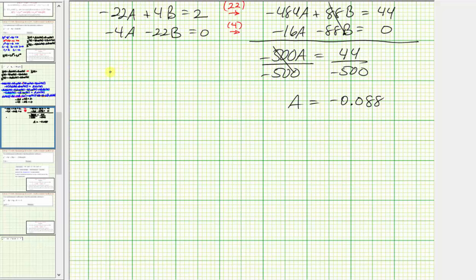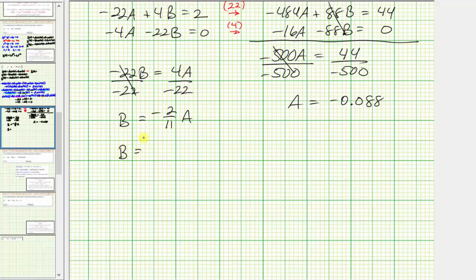we get negative twenty-two B equals four A. Dividing both sides by negative twenty-two gives B equals negative two-elevenths times A. So B equals negative two-elevenths times negative 0.088, which equals positive 0.016.